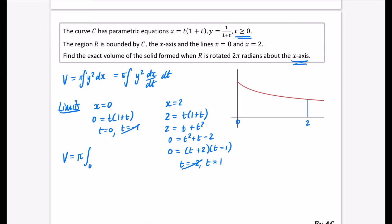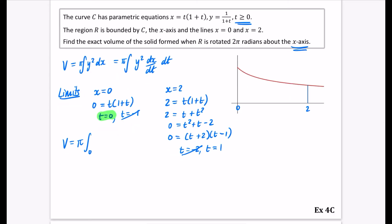So the t that was 0 is here. And this t that's 1 is going to go at the top. And then it's just going to be our y squared dx/dt dt. So y squared is going to be 1/(1+t) squared. And x equals t(1+t) which is t plus t squared. And we also need to have the dx/dt.